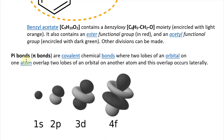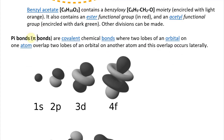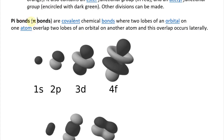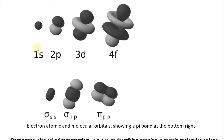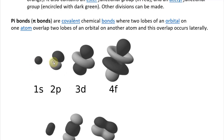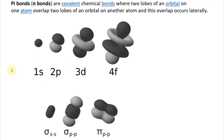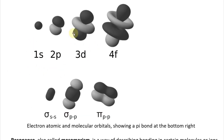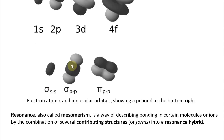Pi bonds, written with the Greek letter pi, are covalent chemical bonds where two lobes of an orbital on one atom overlap two lobes of an orbital on another atom, and this overlap occurs laterally. Hence why it's called a pi bond — there are two lobes on the pi. Electron atomic and molecular orbitals show a pi bond at the bottom right where they're overlapping.